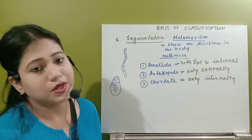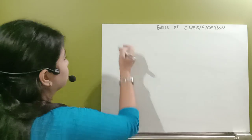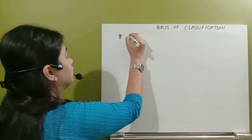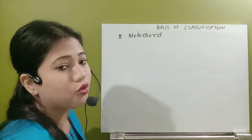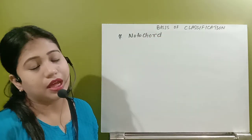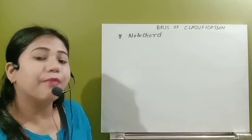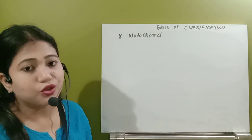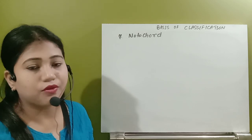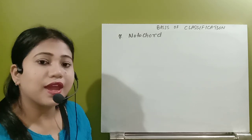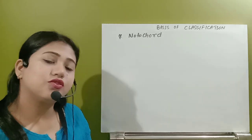Now let's see the next and last basis of classification, which is notochord. What is notochord? Notochord is a stiff rod-like structure which is developed in the embryonic state on the dorsal surface of the embryo. Whenever the baby is in the mother's womb, the organs start to develop, and this way a stiff rod-like structure is also developed.